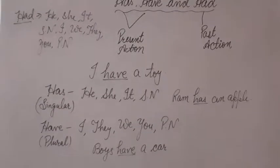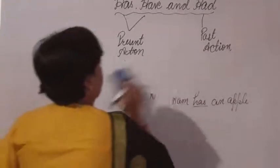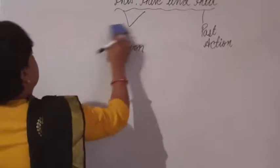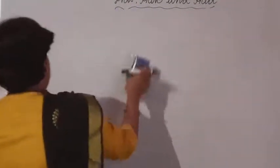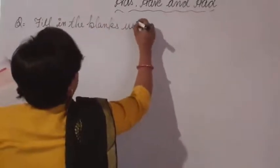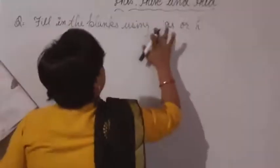Now let's see the exercise for this chapter. Look at the first exercise. We will fill in the blanks using only has or have — हमें इन दोनों में से ही चूज करना है.